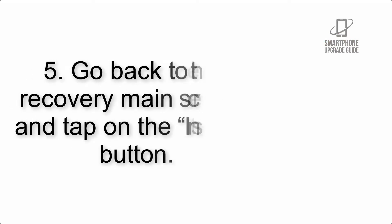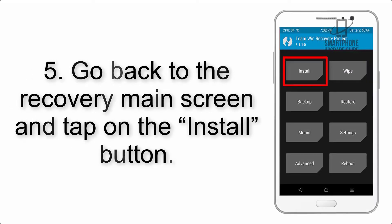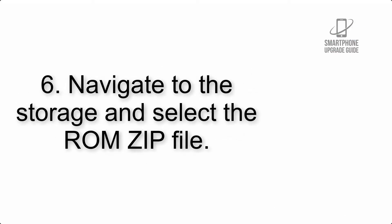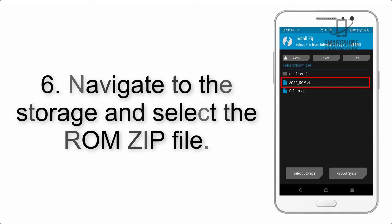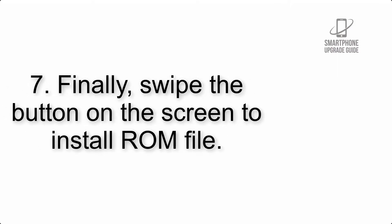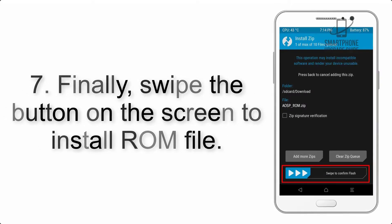Step 5: Go back to the recovery main screen and tap on the Install button. Step 6: Navigate to the storage and select the ROM zip file. Step 7: Finally, swipe the button on the screen to install the ROM file.